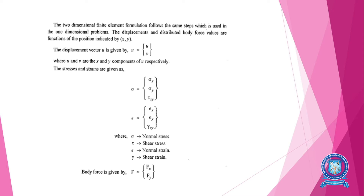The stresses and strains are given as follows. Stress vector sigma equals [sigma_x, sigma_y, tau_xy]. In one-dimensional element we take just one stress, but here we take sigma_x, sigma_y, and tau_xy. Likewise for strain: in one-dimensional we take only strain e, but here strain e equals [e_x, e_y, gamma_xy]. Here sigma is normal stress, tau is shear stress, e is normal strain, and gamma is shear strain.